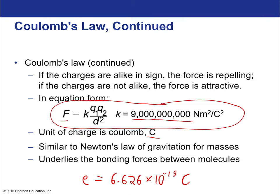Coulomb's Law is really similar in form to the law for universal gravitation. You would replace K with G, and replace the two charges with M₁ and M₂, and then have D squared—that gives you the fundamental law of gravitation. Notice they really are the same sort of law: both have a fitting constant, a product of quantities (charges instead of masses), both divided by distance squared.